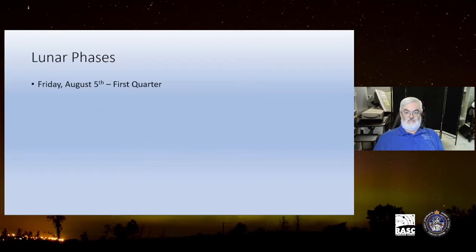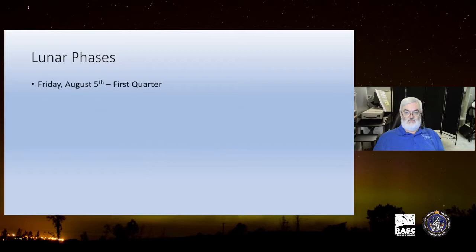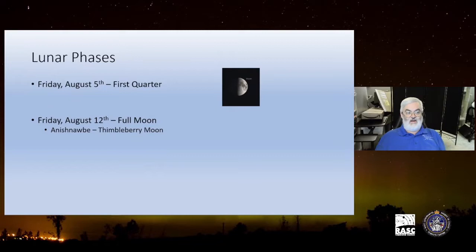First quarter happening almost immediately two days from now, so we'll have some additional light to contend with if we're out there trying to observe. Of course, Friday August 12th, full moon. It's the Anishinaabe Thimbleberry Moon, giving recognition to our First Nations in Ontario, but that also will have an impact on one of the other celestial events that we will want to look at this particular month.